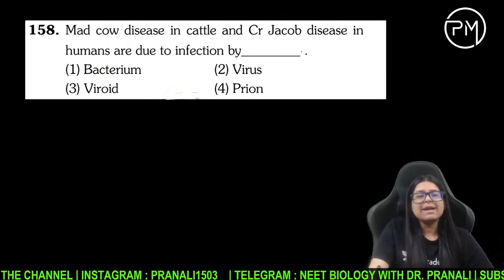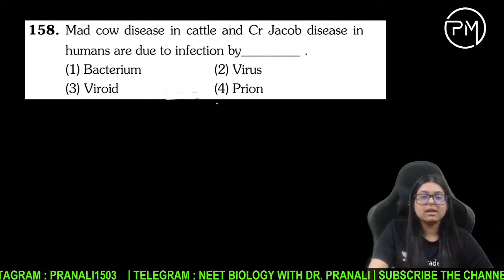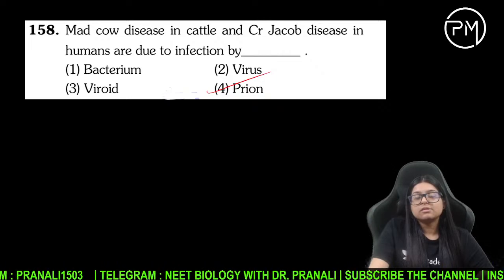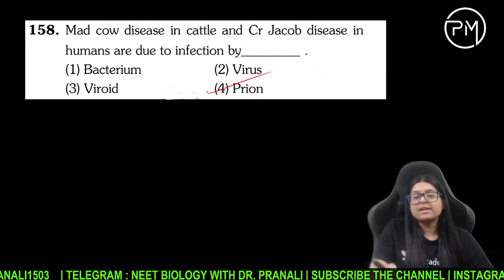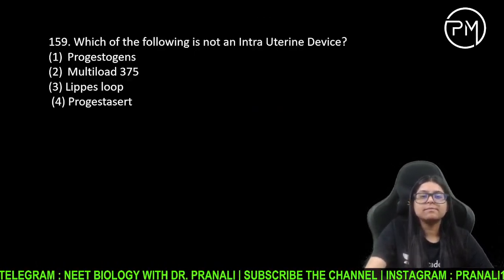Mad cow disease kisse hoti hai? Prion se hoti hai. Creutzfeldt-Jakob disease bhi usi se hoti hai.